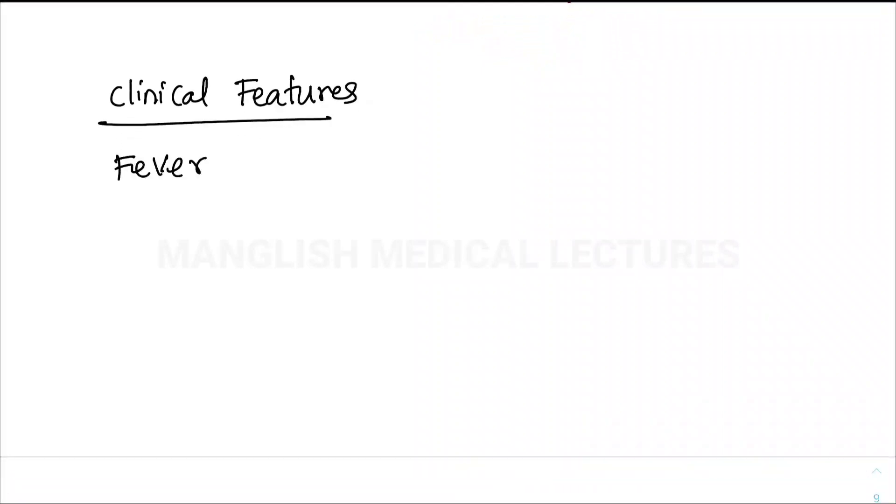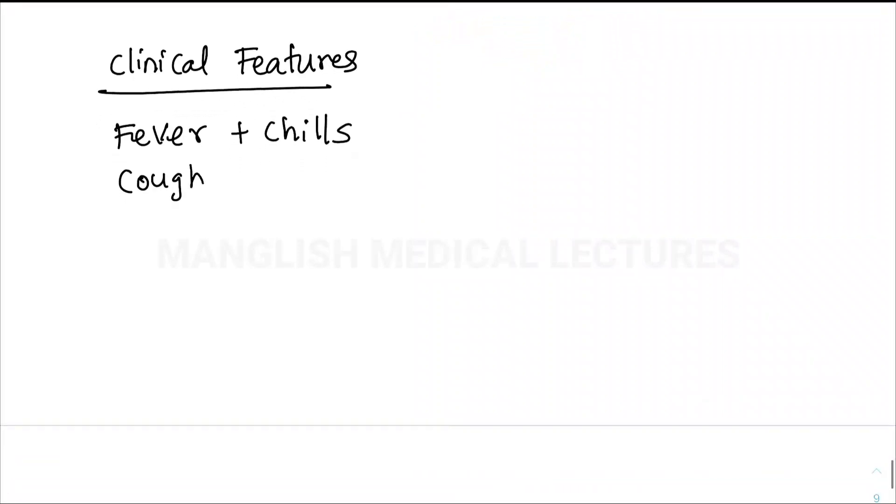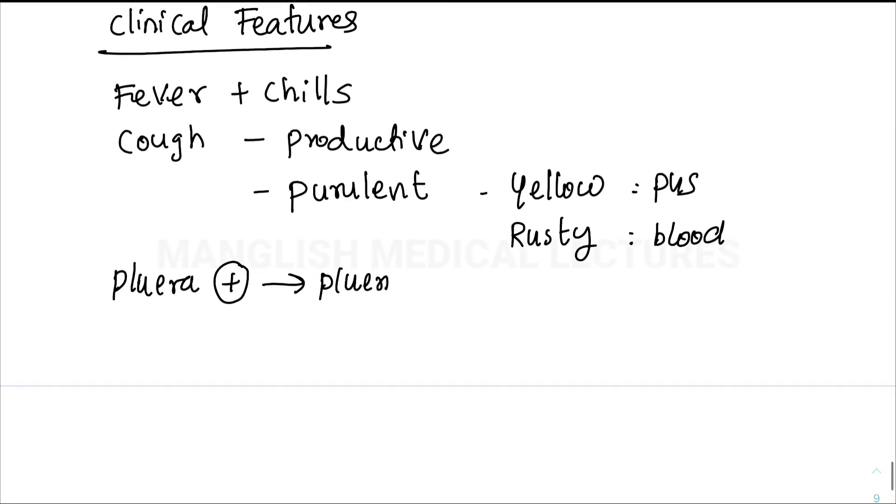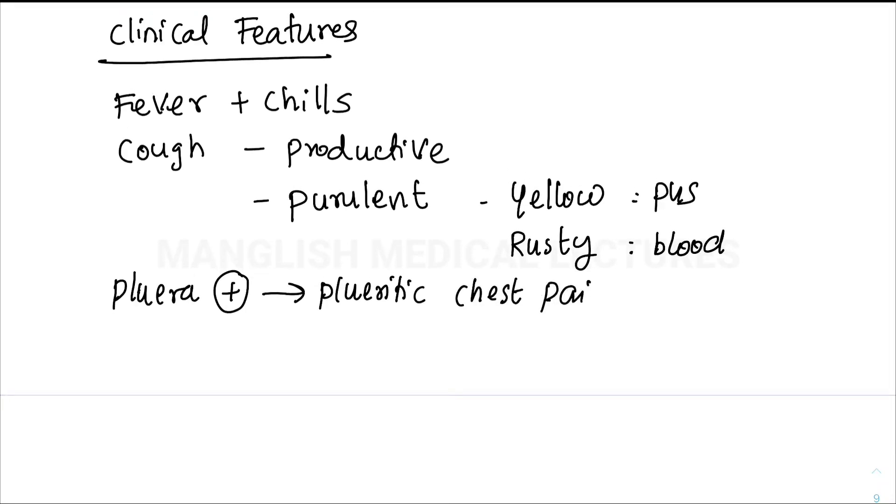Coming to the clinical features of pneumonia: in typical pneumonia you can have high-grade fever with chills and productive cough. The sputum can be yellow color indicating pus or rusty color indicating blood. Another important feature is pleural involvement—you can have pleuritic chest pain. The patient complains of pain on inspiration because of involvement of pleura.